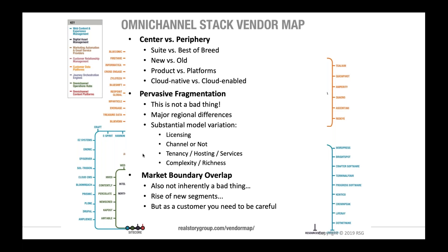We're also seeing a lot of market boundary overlap, where vendors do one thing but also parts of another. That can be good if you can kill two birds with one stone, but can be a problem if you want a services-oriented architecture. A great example is CDP vendors trying to sell orchestration services, or journey orchestration vendors trying to sell CDP services, or — which you never want — your web content management system claiming it can be your CDP.